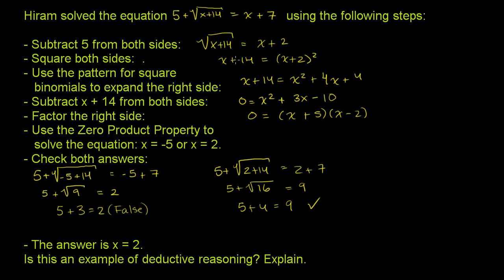And then he squared both sides. The square root of x plus 14 squared is just x plus 14. That makes sense. And x plus 2 squared is x plus 2 squared.